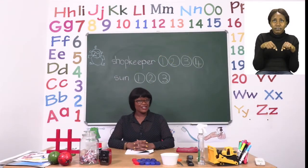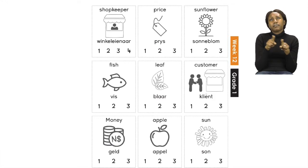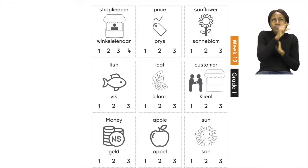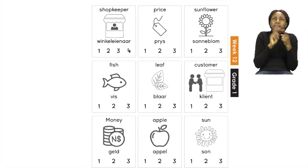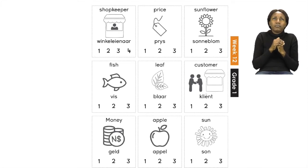Now boys and girls, let's move on to our next activity on page 29. On page 29 we are going to be doing syllables. Remember, syllables is when we break down a word to find out how many parts it has. Letters make sounds and those sounds turn into words, but now we're going to break apart words to see how many syllables they have. We're going to do the first one and the last one together. The first word we have is the word shopkeeper.